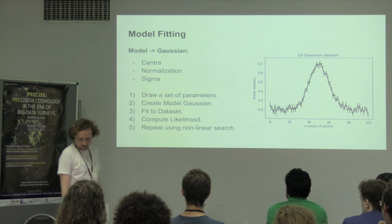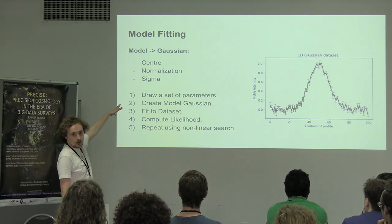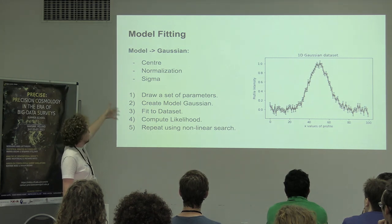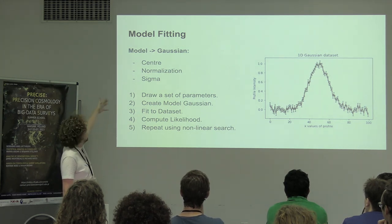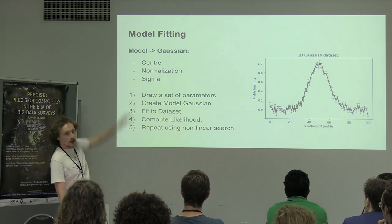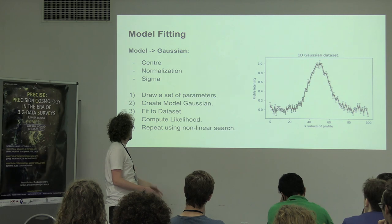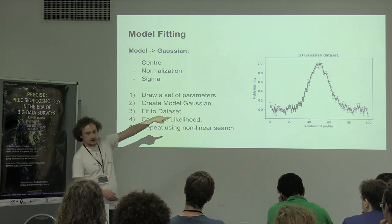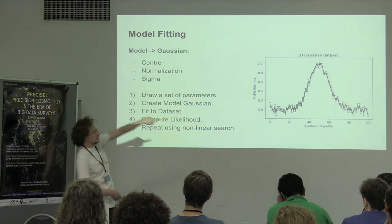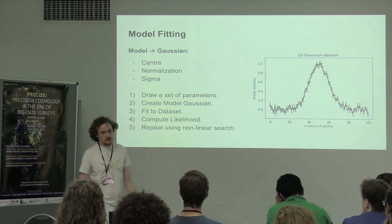There's a high-level overview of how this works algorithmically. First, you pick a model — in this case a 1D Gaussian. I've chosen to parameterise it with three parameters: a centre, a normalisation which controls the height, and a sigma value which also controls the width. We've got to basically figure out what combination of these three parameters matches the data.